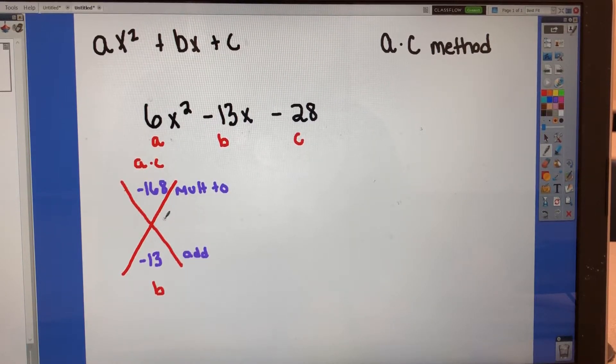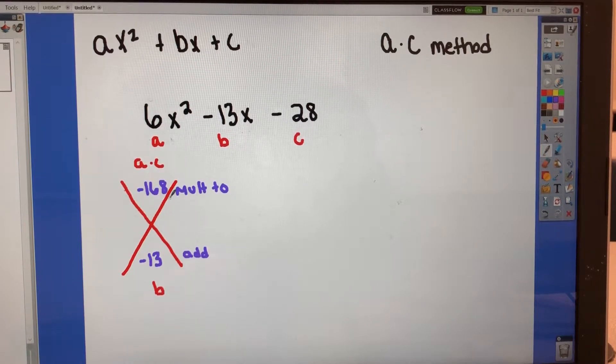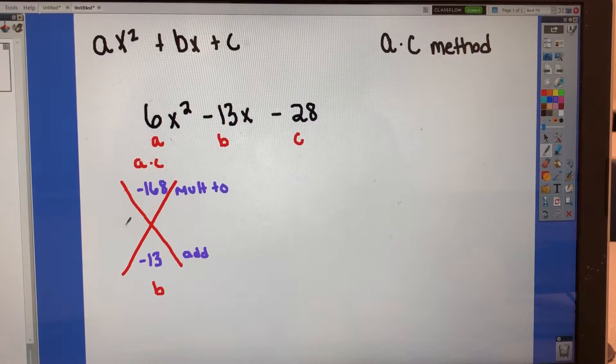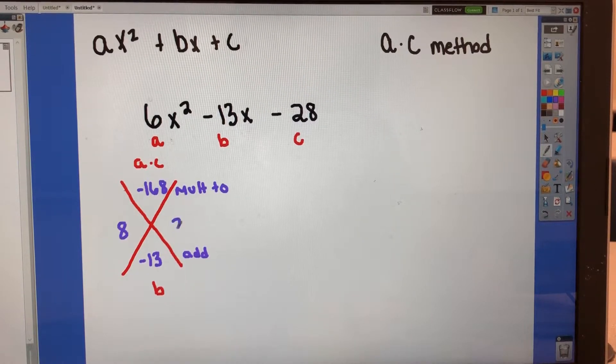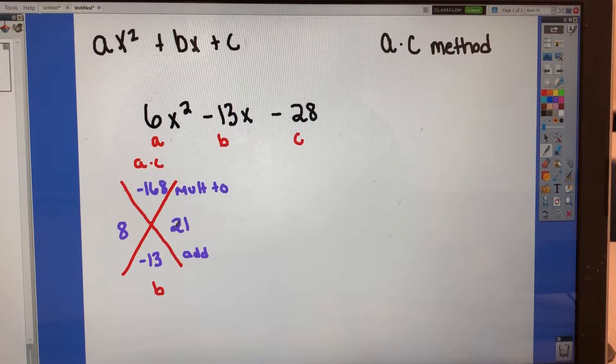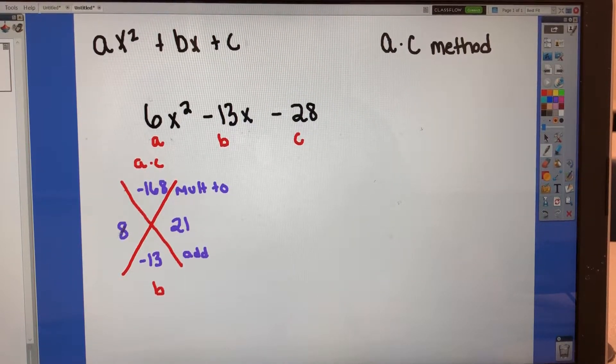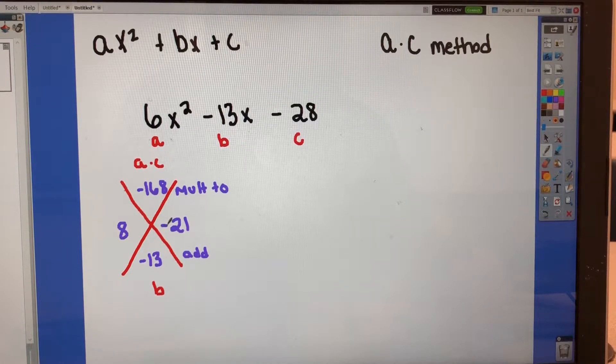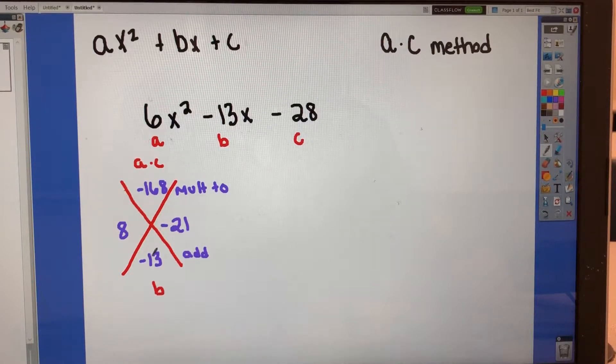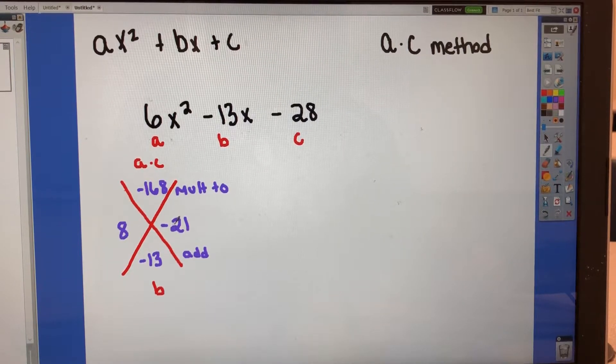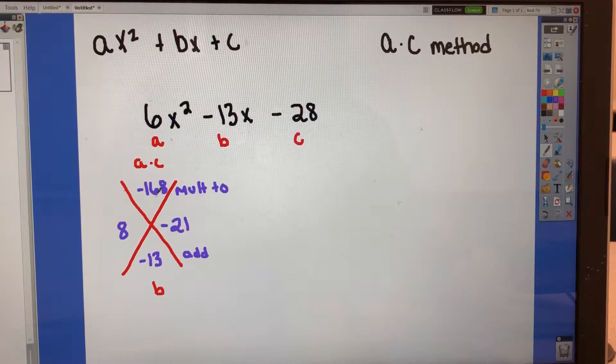So just for time's sake, those numbers are going to be 8 and 21. So we're going to put those here. So I'm going to put my 8 here and my 21 here. It doesn't matter where you put which one, because then we will work that out. But here we have 8, and this is going to be a negative 21 because of negative 13. So 8 minus 21, negative 13, 8 times negative 21, negative 168.